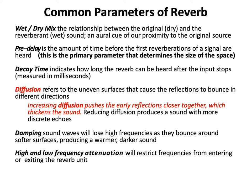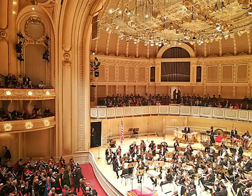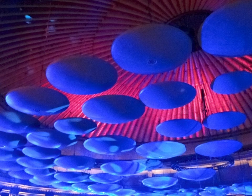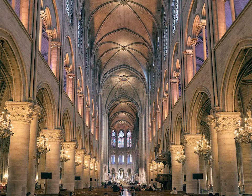Generally, we'll leave the wet-dry mix in the plugin itself at 100%. Pre-delay, as mentioned, is the amount of time before the first reflections are heard — the primary parameter that determines the size of the space. Decay time, or reverb time, indicates how long the reverb can be heard after the input stops, measured in milliseconds or seconds. Orchestra Hall, where the Chicago Symphony Orchestra plays, has a reverb time of 1.2 seconds. Royal Albert Hall is three and a half seconds, and cathedrals can exceed four or five seconds.